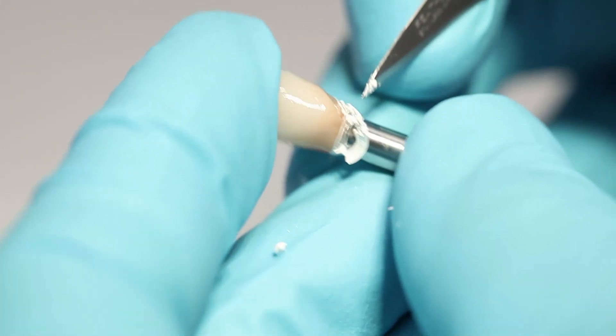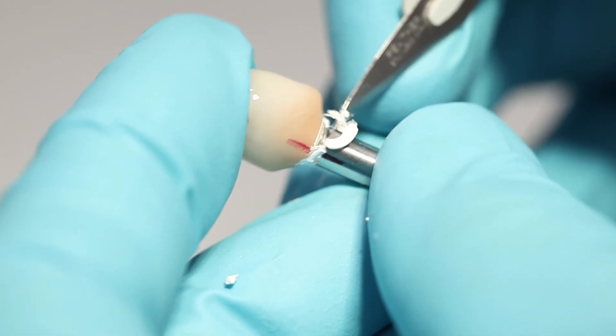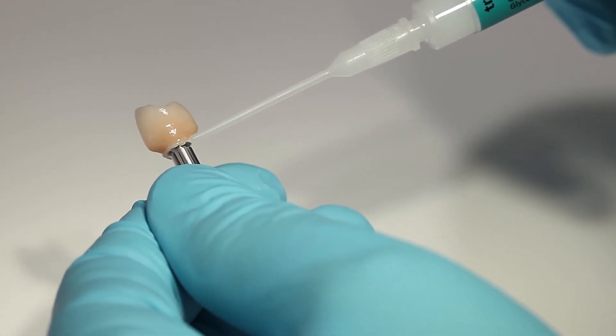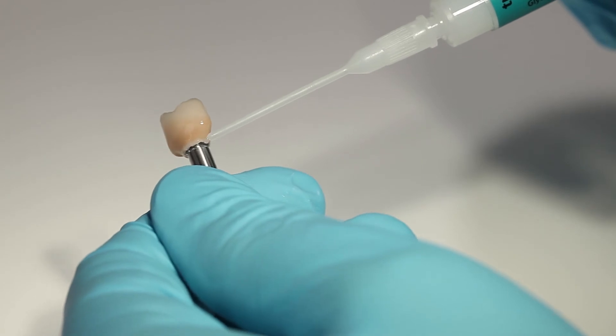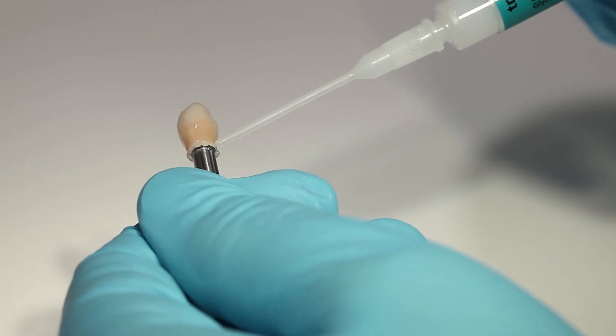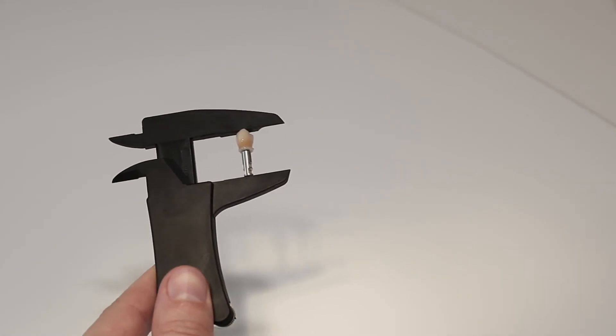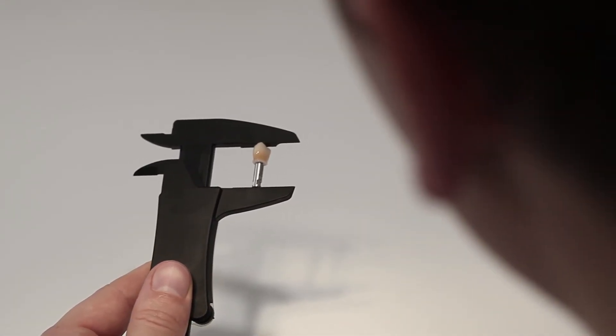For the clean-up, use a suitable instrument such as a LeCron. Apply glycerin gel such as liquid strip to the cementation joint to prevent the formation of an inhibition layer before the luting composite auto-polymerizes. It takes multi-link hybrid abutment approximately 7 minutes to auto-polymerize.